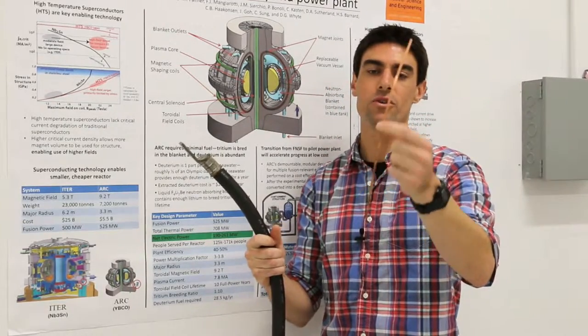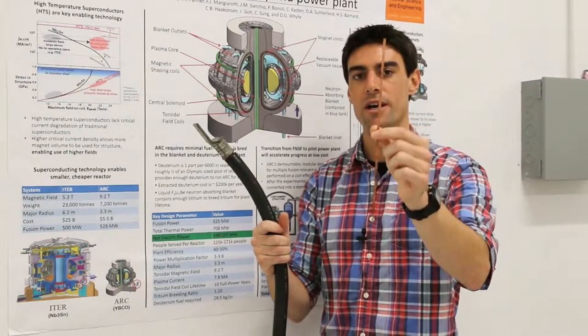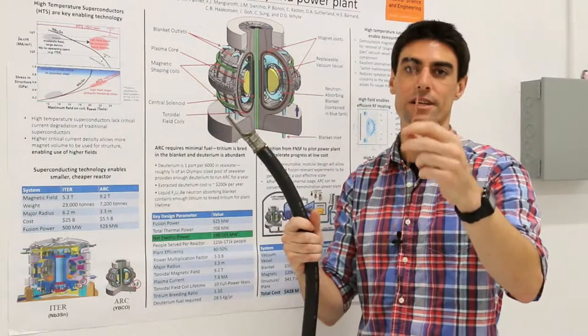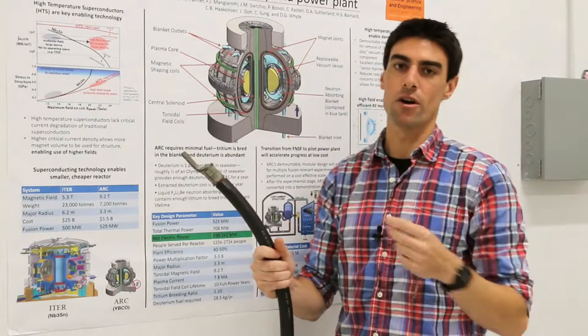This is a material that you can put current through and you will have no resistive losses, so no power loss. The special part about this particular type of superconductor is that it can exist at very high fields and it allows something like the ARC design to be built.